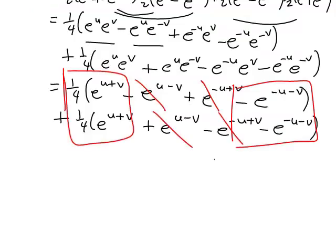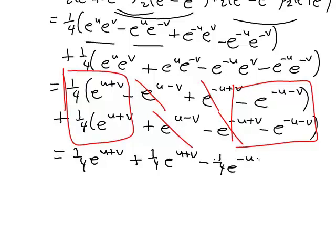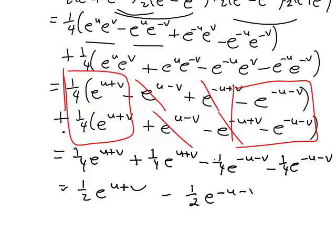Writing that out clearly: a quarter e to the u plus v, plus a quarter e to the u plus v, minus a quarter e to the negative u minus v, minus a quarter e to the negative u minus v. A quarter plus a quarter gives a half e to the u plus v, and negative a quarter minus a quarter gives minus a half e to the negative u minus v. Taking the half out as a common factor gives: a half times e to the u plus v minus e to the negative u minus v.